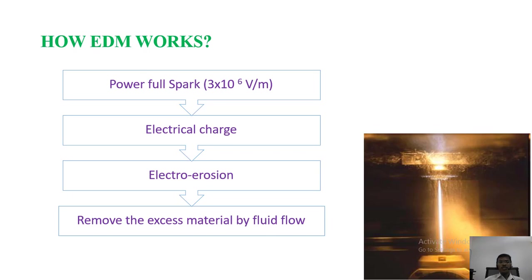How it works? These are the steps followed by electrical discharge machining. The powerful spark is produced, 3 into 10 to the 6 volts, and electrical discharge is produced and electro-erosion takes place. Generally, mechanical erosion is when the object will be eroded. Here, electrical erosion means the object is eroded by electrical energy. That is why we are saying electrical erosion. And remove the excess material by applying the fluid. It may be a dielectric fluid.